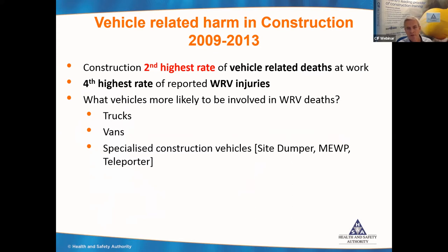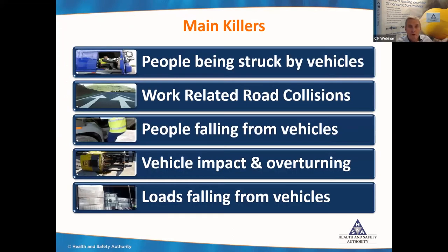What vehicles are most likely to be involved in work-related deaths? Trucks and vans, but also specialized construction vehicles like site dumpers, nukes and teleporters as seen in the previous infographic. The main killers: the highest is people being struck by vehicles — borne out by the statistics. The second highest is work-related road collisions, though we don't have all the data yet. That's followed by people falling from vehicles, vehicles overturning, and then loads falling from vehicles.